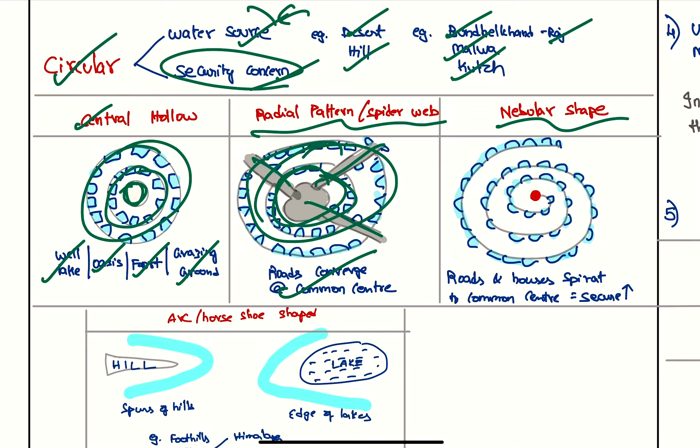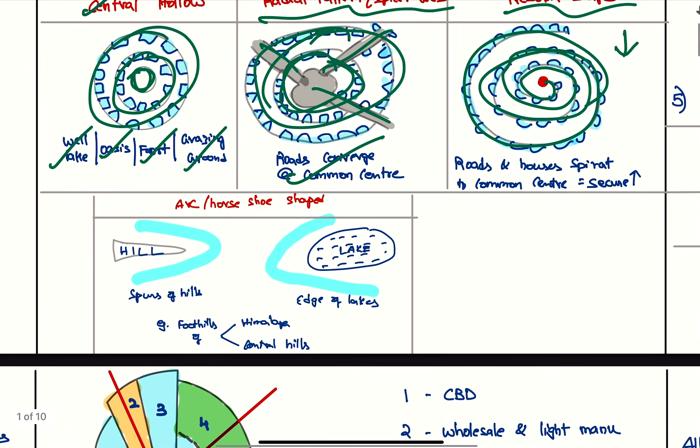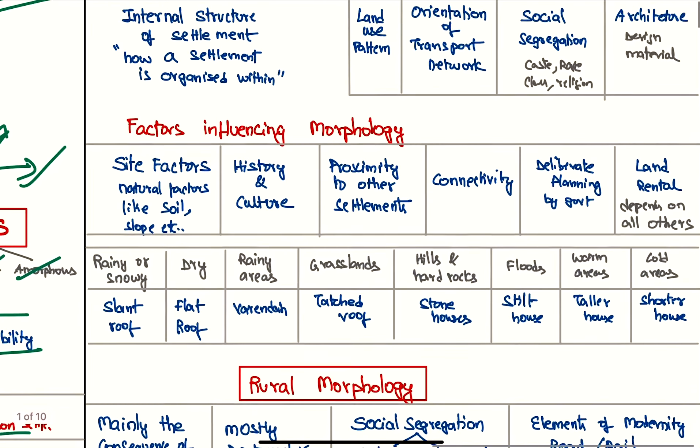Or the nebular shape—this is for security reasons. This will be most secure but accessibility will be low in this one, so it is generally seen in forts and ancient cities. Next we have the actual arc or horseshoe shape. This is generally seen at the spurs of the hill or edge of the lakes, so like this at the edge of the lake. These are seen in Himalayas and central hills.